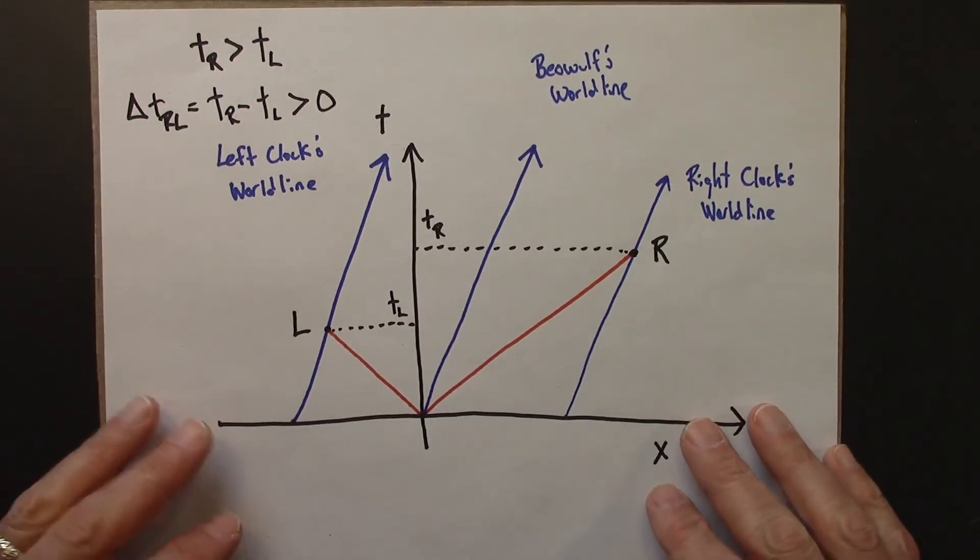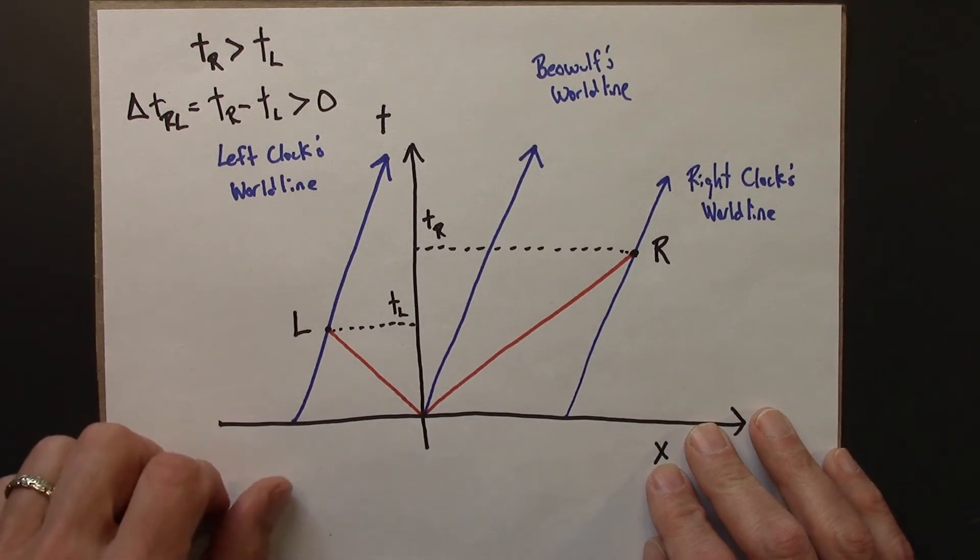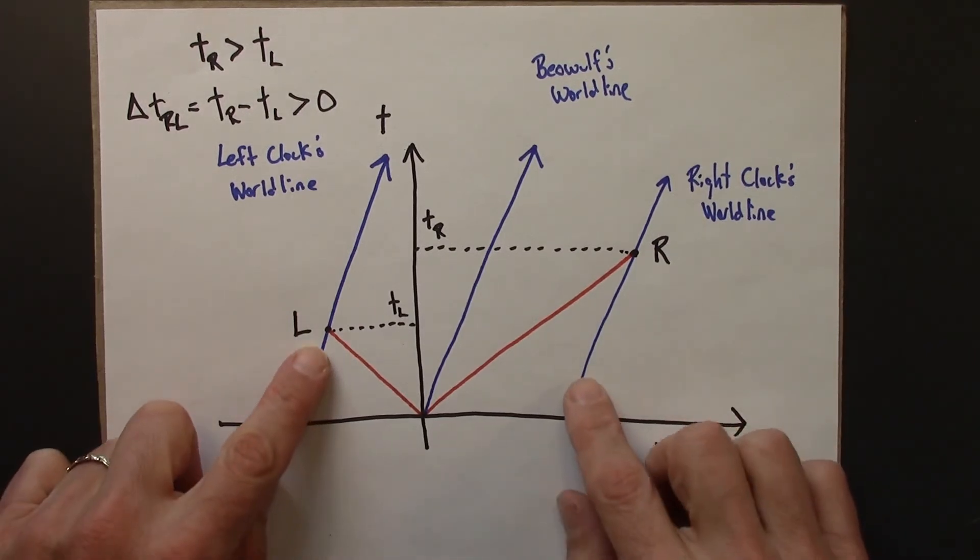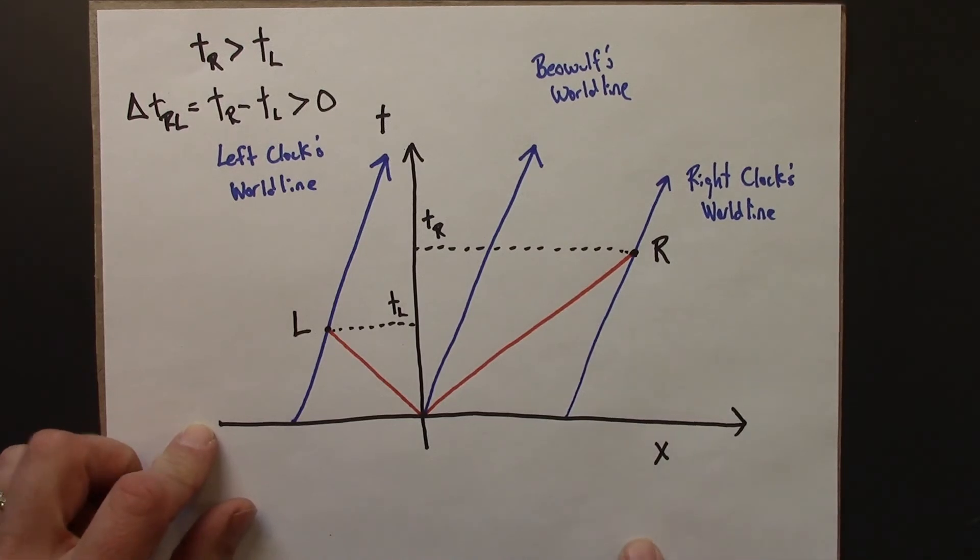All right. So what do we conclude from this? So what we conclude is that coordinate time is frame-dependent. In Galilean relativity, time equals time. Everybody would agree on the time that an event occurred. That's not the case here.